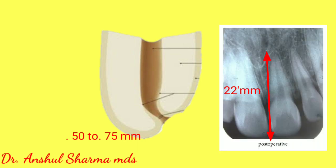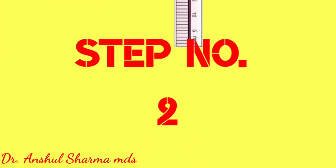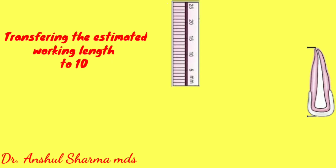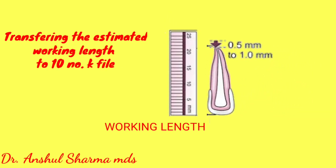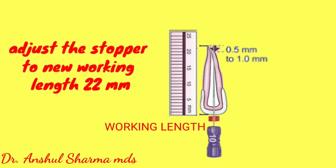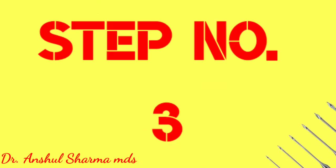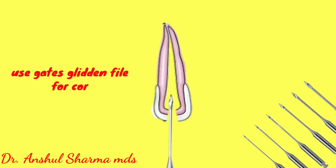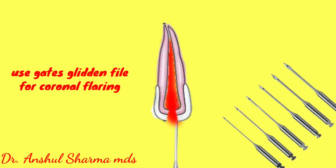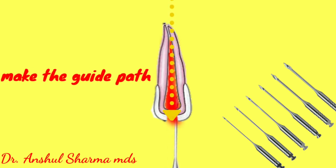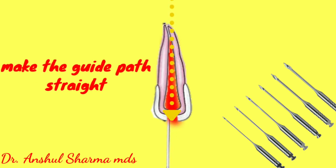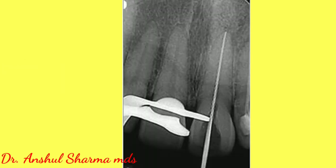The second step is transferring this working length estimation to a size 10 K file and adjusting the stopper to the new working length of 22 millimeters. The third step is to use a Gates Glidden drill or end-cutting bur to widen and coronally flare the coronal part of the canal, so that the entire guide path becomes straight and errors in working length estimation are avoided.